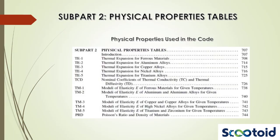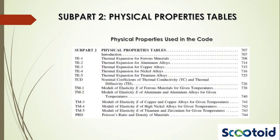Subpart 2 of Section 2, Part D includes the physical properties of most alloys used across all sections of the ASME Boiler and Pressure Vessel Code. Included in this subpart are tables on thermal expansion, thermal conductivity, thermal diffusivity, and various moduli of elasticity. These values are all listed as a function of temperature ranging from 20 degrees Celsius to 900 degrees Celsius. Subpart 2 also contains tables for density and Poisson's ratio for ferrous and non-ferrous alloys.